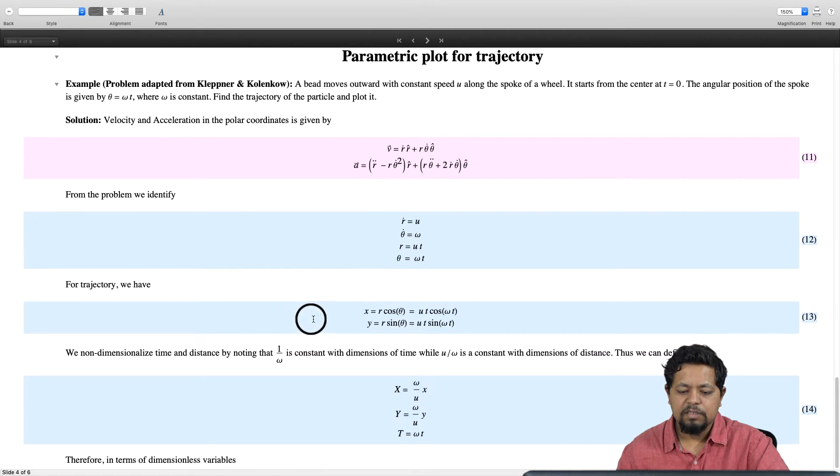For the trajectory, the x coordinate is r cos theta which is ut cos omega t, and y coordinate is r sin theta which is ut sin omega t.